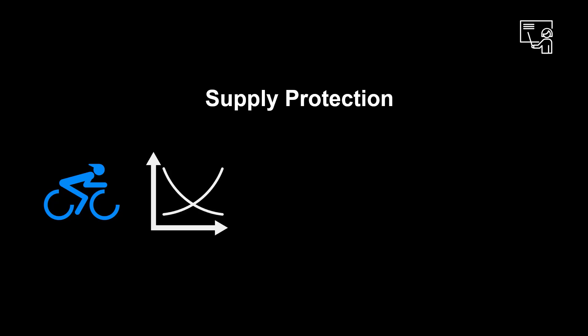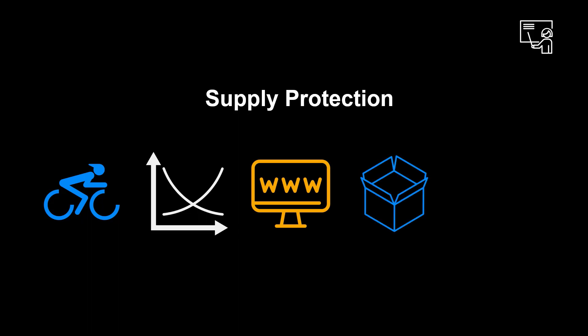Before we head on to the system demo, let's look at the concept of supply protection. Supply protection is used when we have a shortage of supply of the articles which we are selling. It works as a virtual demand reservation for a specific material and plant combination. The reservation is set up against characteristics, for example distribution channels such as e-commerce. The available stock will be reduced virtually for sales orders with different characteristics from other distribution channels in our example.